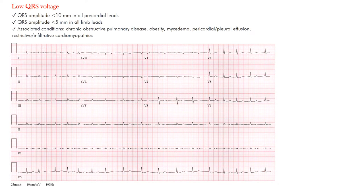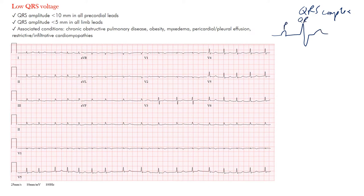Low QRS voltage — that's what we want to discuss today. First, you have to know what the QRS complex is. To review: this is our P wave, this is the QRS complex, and this is a T wave — a normal cardiac cycle. There's no Q wave here; the Q wave is the first negative deflection of a QRS complex that precedes an R wave.